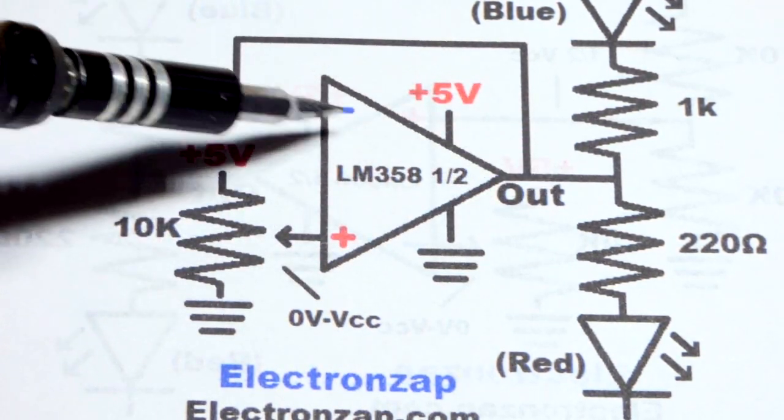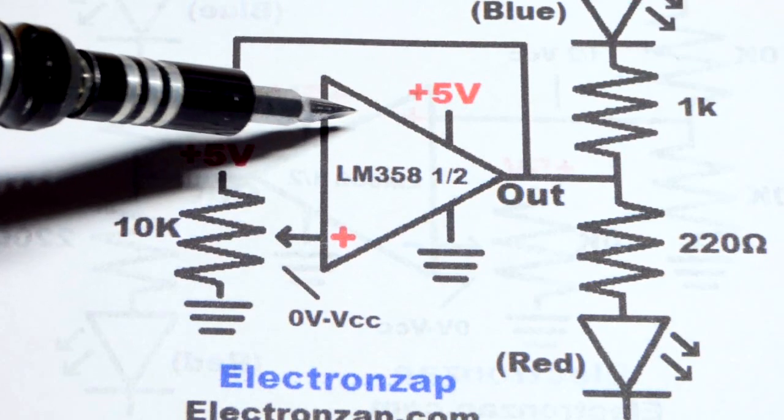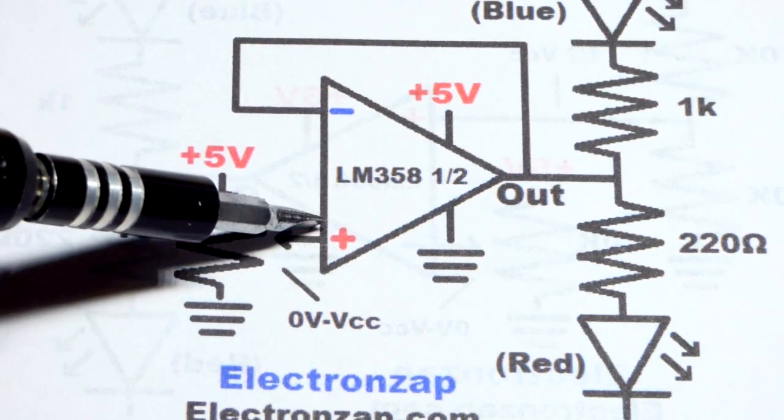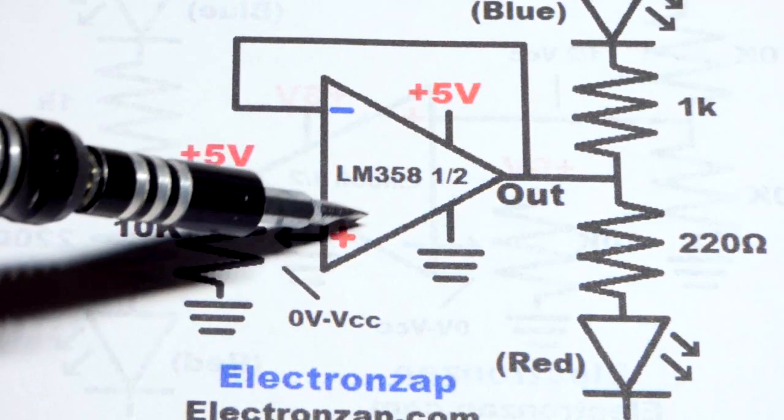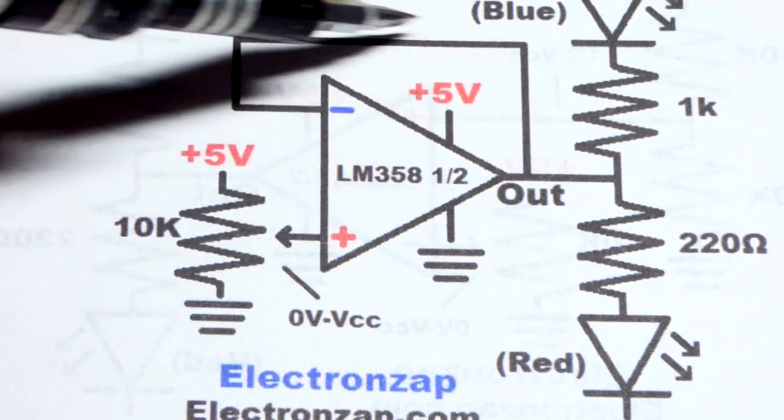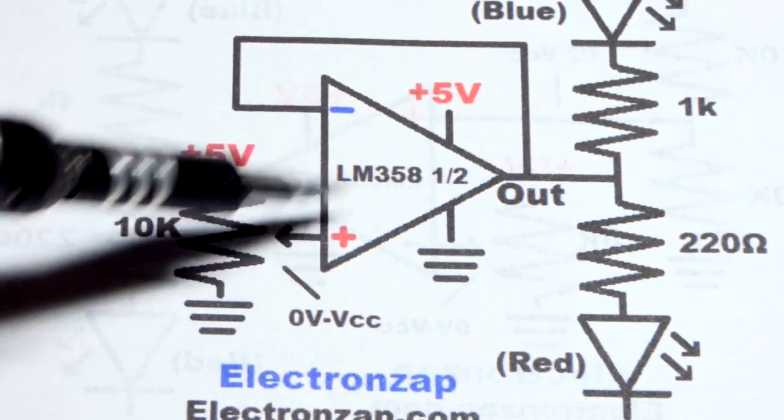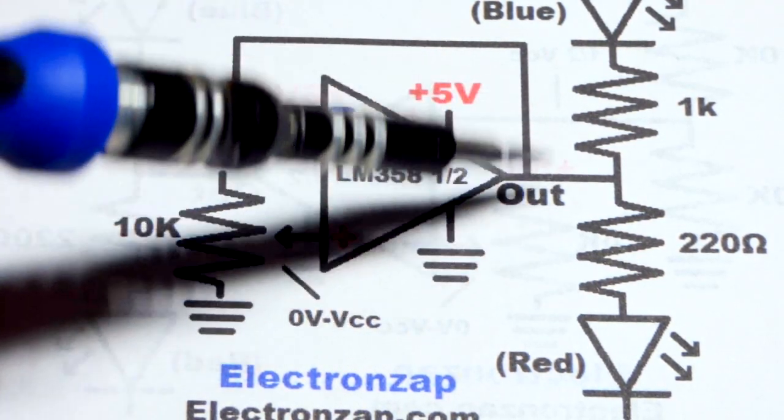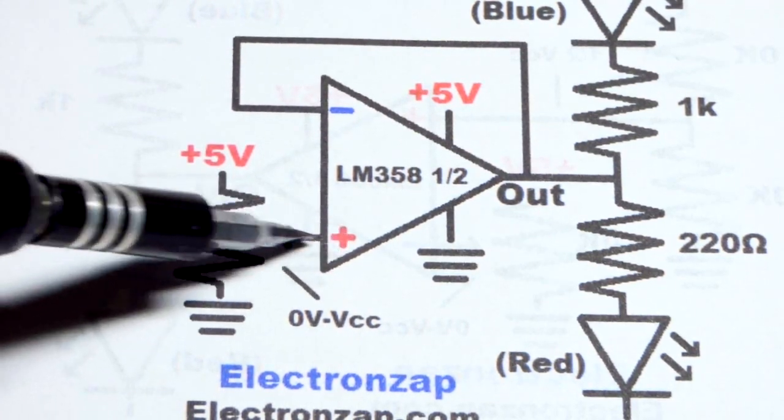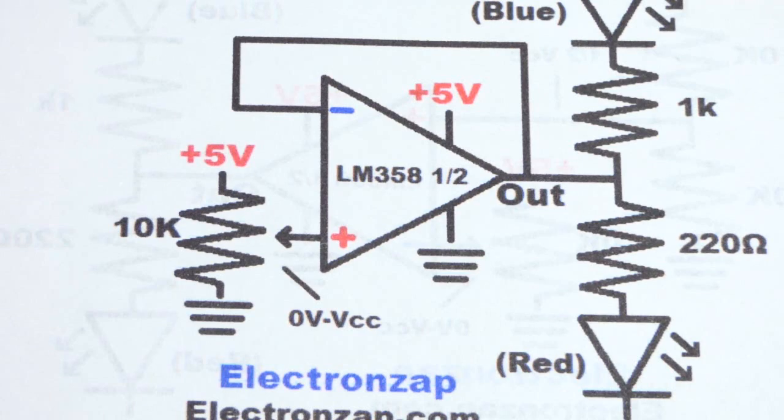Now we have feedback coming back, so the voltage will change at the inverting input. If we try to raise the voltage at the non-inverting input above the inverting input, that output raises and raises it up. Basically it just raises and lowers as needed to match the non-inverting input that we set.